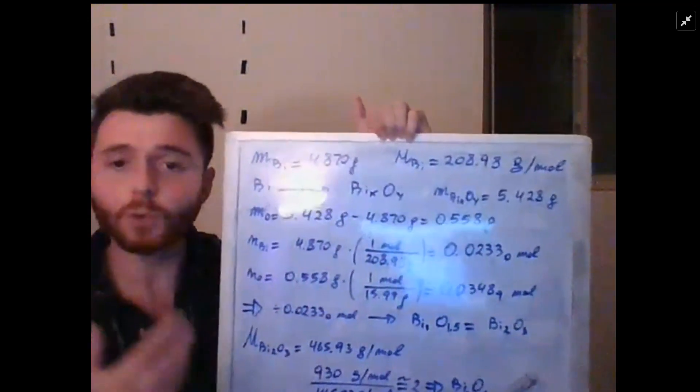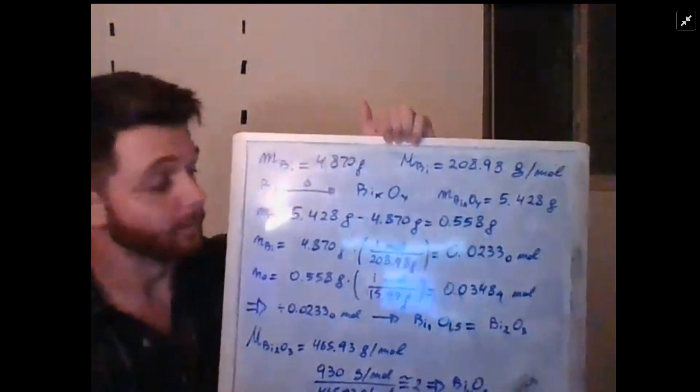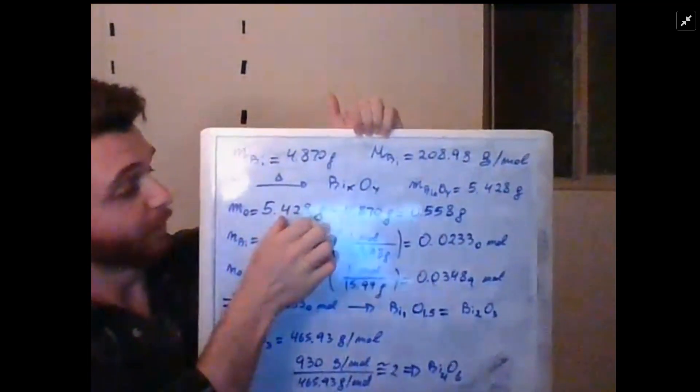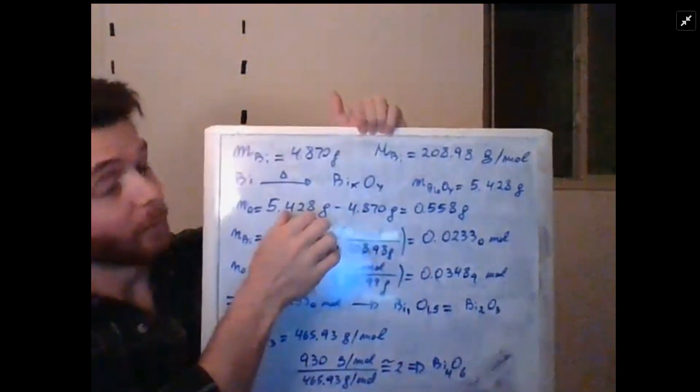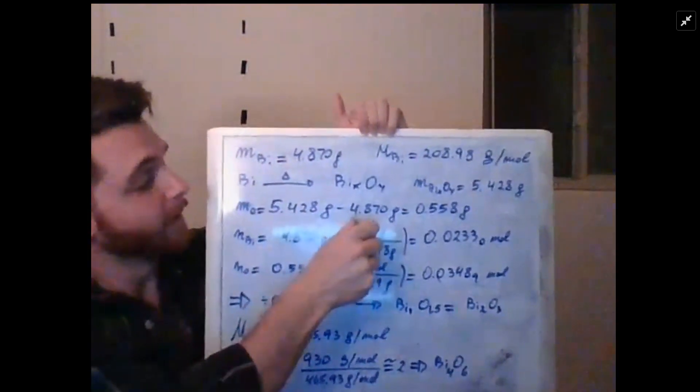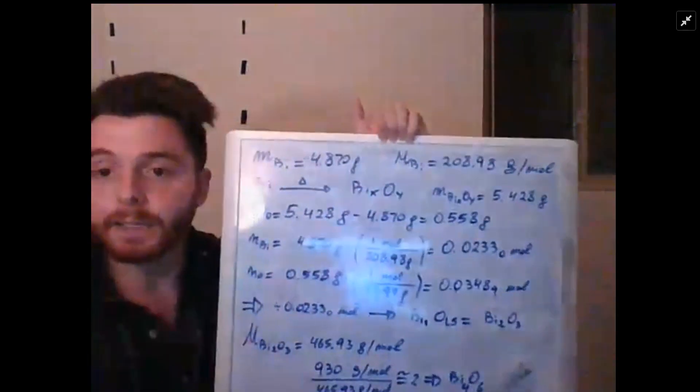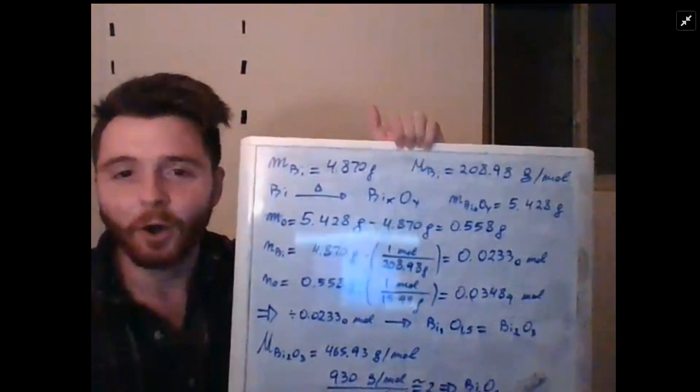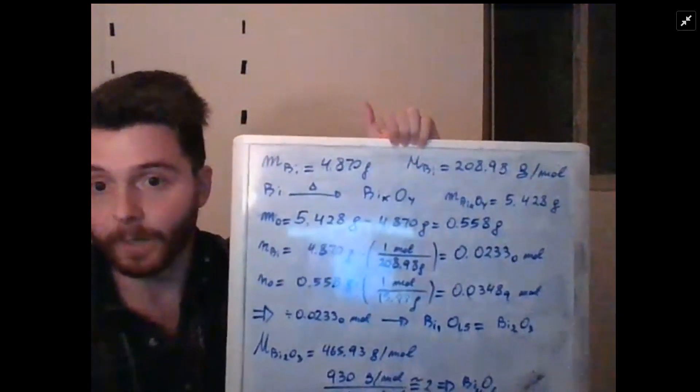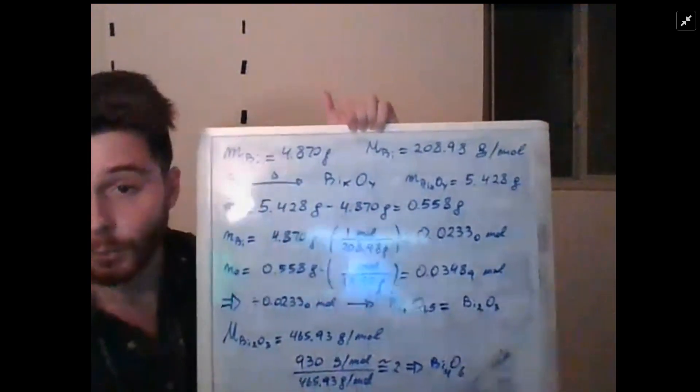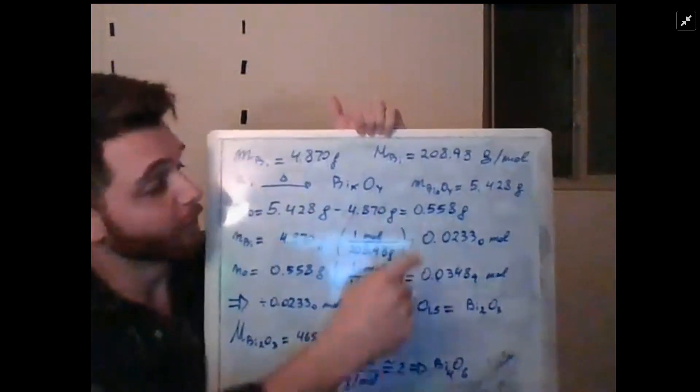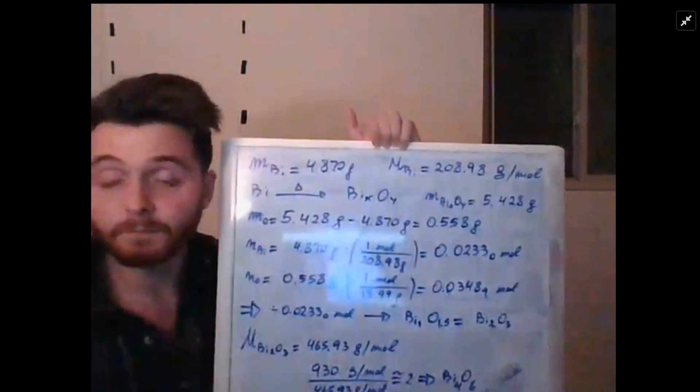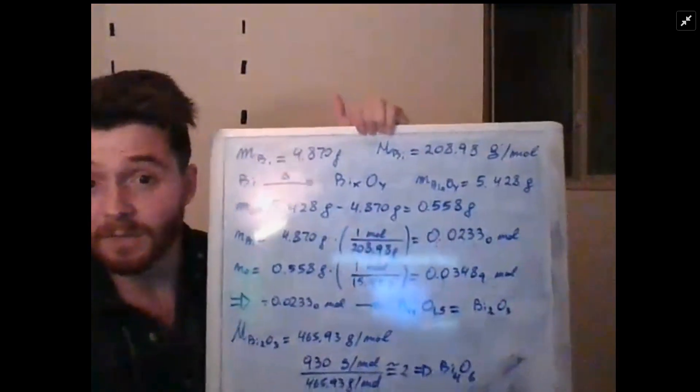We can assume that the difference between 5.428 grams and the initial mass of bismuth is the mass of oxygen. So we compute the mass of oxygen to be 0.558 grams. Remember significant figures in units—you want to be wary about significant figures, especially for your final value.